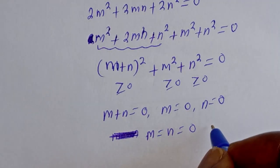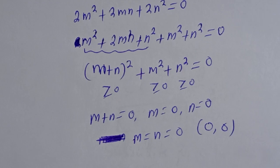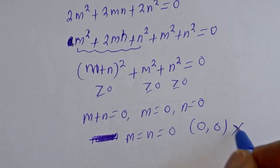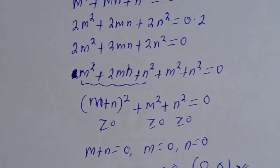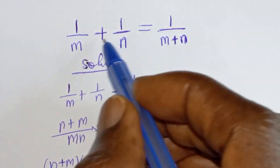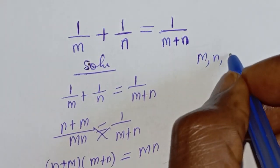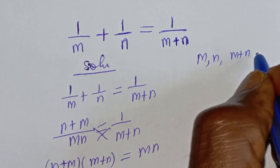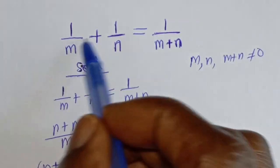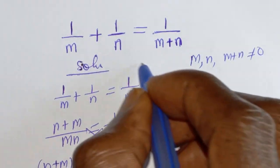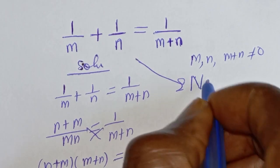Then we now have 0, 0. So is this the answer? No. Let's see. From the equation here, it shows that m, n, m plus n cannot be equal to 0 if you observe this very well. So therefore, we conclude that this equation has no solution.